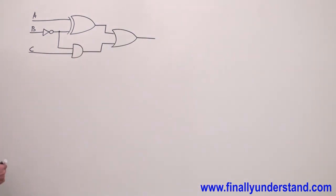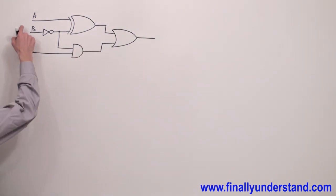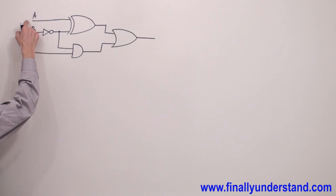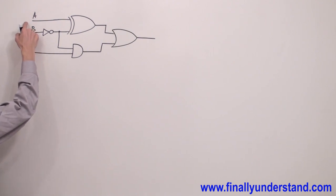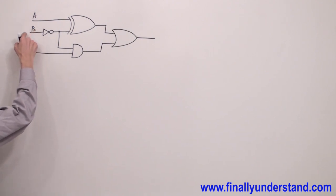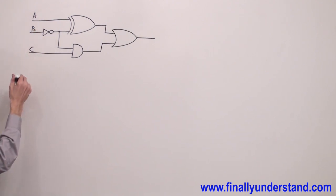First, you have to check how many inputs you have. One, two, three — you have three different variables: A, B, C.